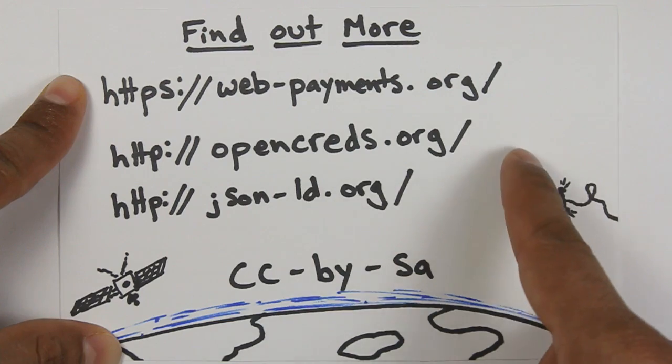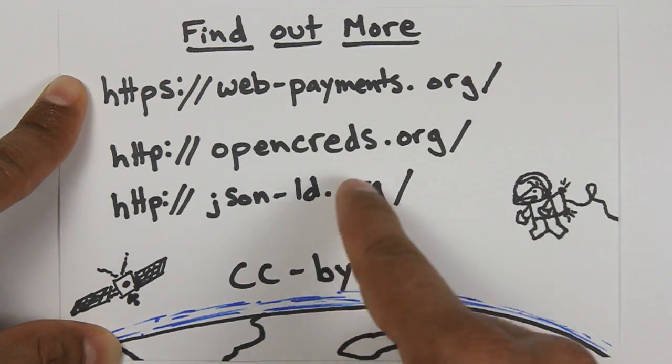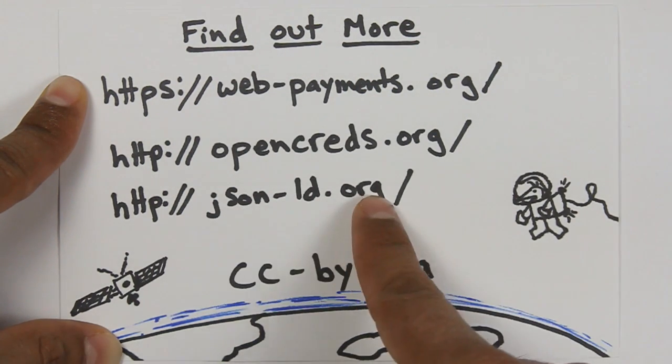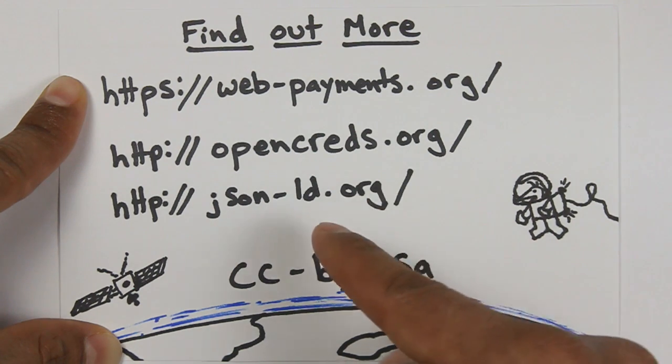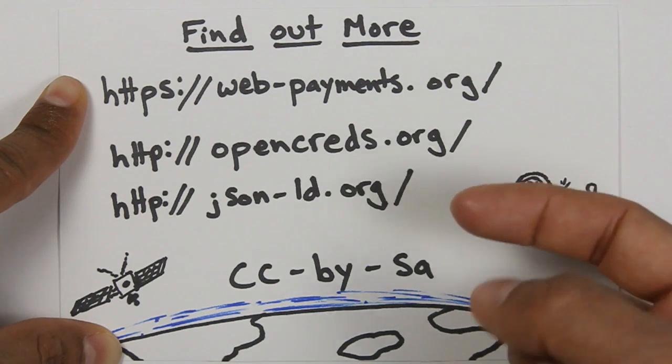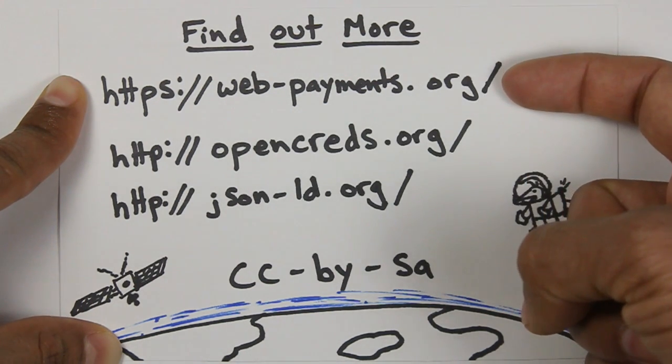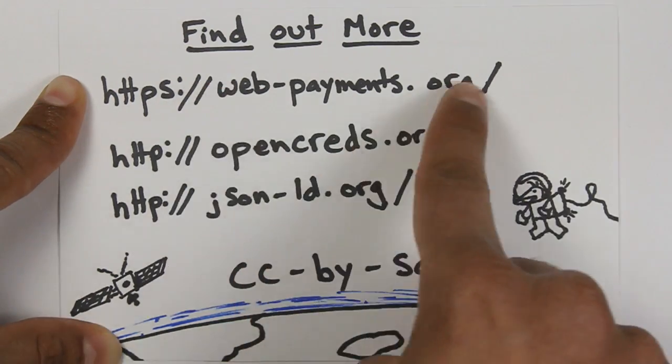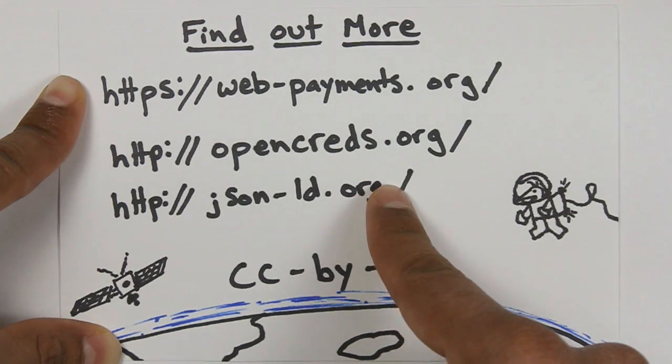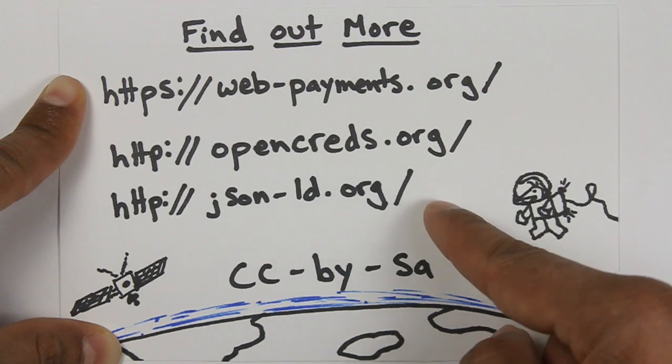One of them is called the Web Payments Community Group. Another group is called the Open Credentials Community Group. And of course, the JSON-LD Community Group is also looking into a lot of the information that we talked about in this tutorial. So if you're interested in joining in and learning about or helping direct some of this work, please join us in the Web Payments Community Group, the Open Credentials Community Group, or the JSON-LD Community Group. If you just Google for any one of those terms, you can find them fairly easily.